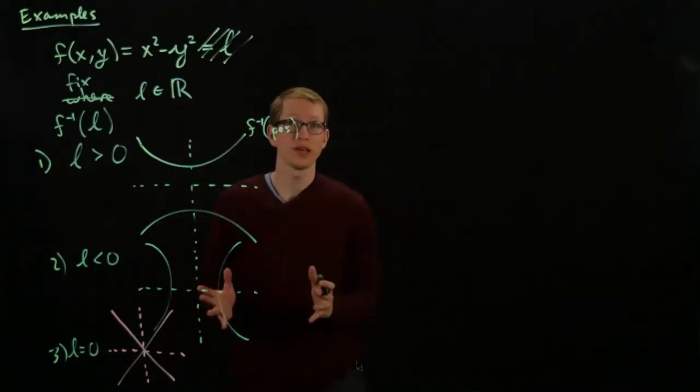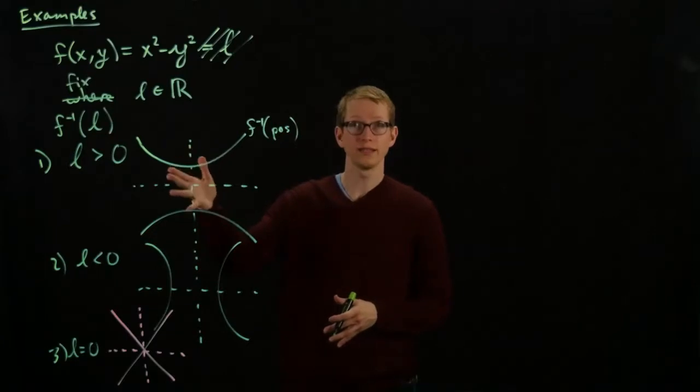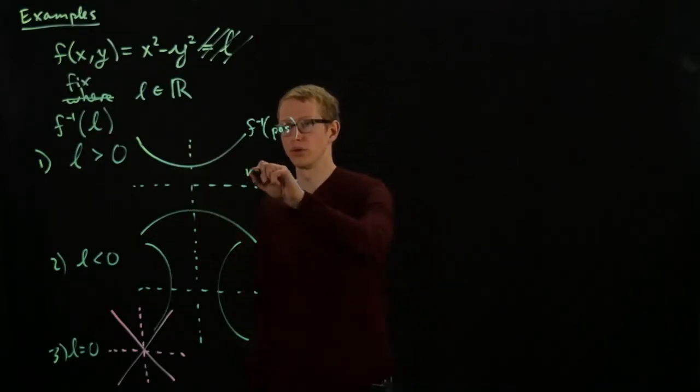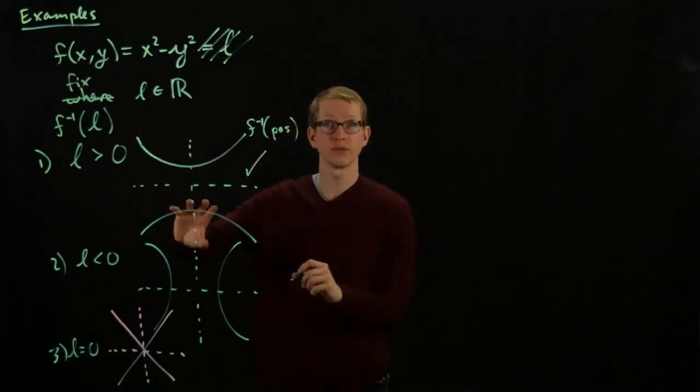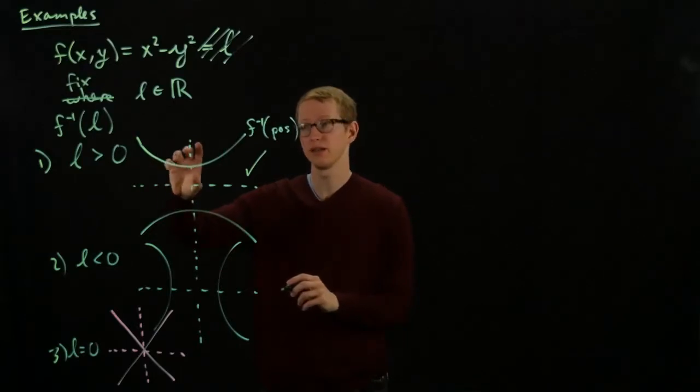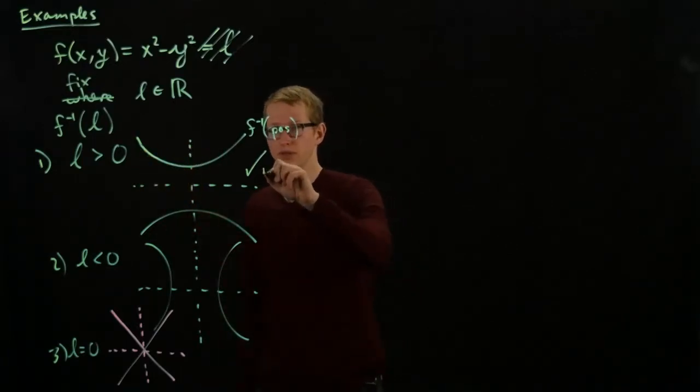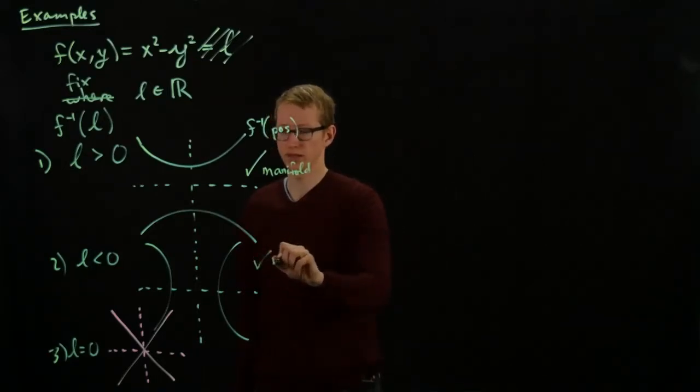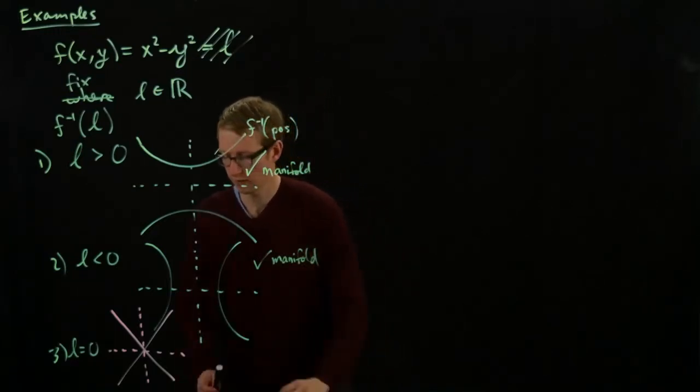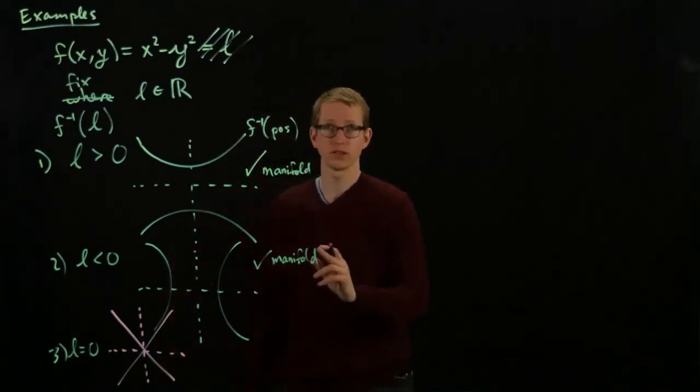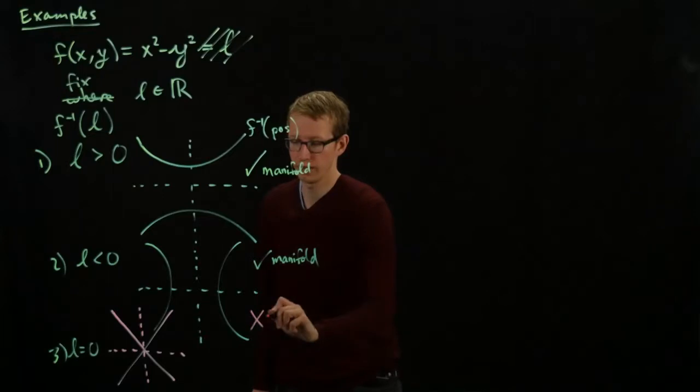And from our definition, we can show that this is a manifold, so this works. Even though it has two different pieces, that doesn't mean that the definition doesn't apply. So this checks and it's a manifold. This checks and it's a manifold. And this is an x. It looks just like the figure 8 that we studied before is not a manifold.